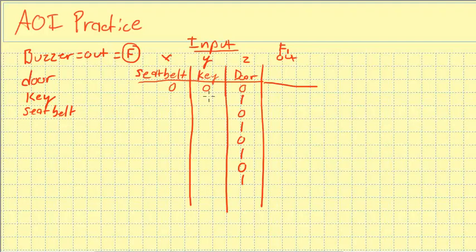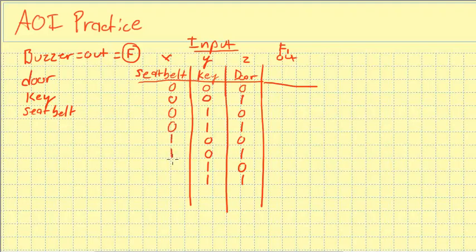The Y column goes 0, 0, 1, 1, 0, 0, 1, 1 — groups of two. The X column goes 0, 0, 0, 0, 1, 1, 1, 1 — groups of four. If you had four inputs, it would be groups of eight. So there's our table: we started where they're all off and ended where they're all on.